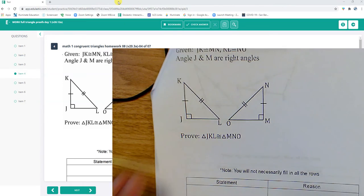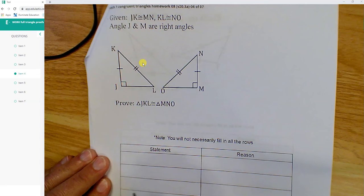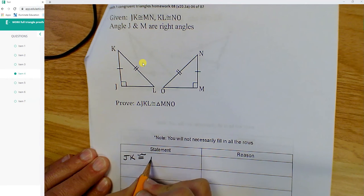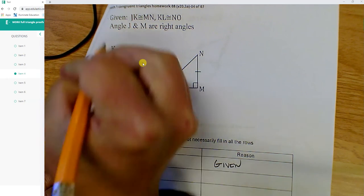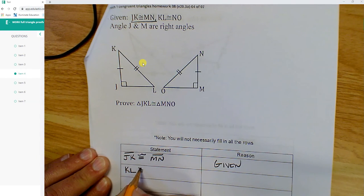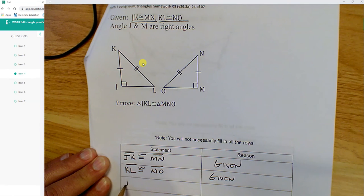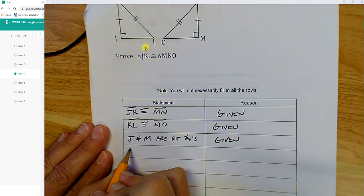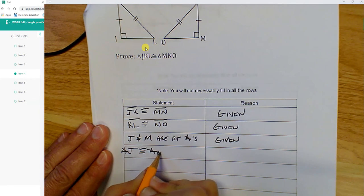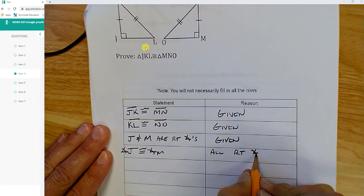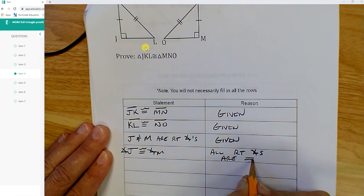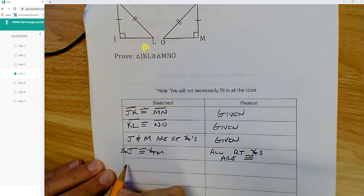I've got a couple of givens, so let's get those givens in there right now. Here we go. JK, MN. KL, NO. J and M are right angles. I'm going to put that J and M are congruent. Angle J is congruent to angle M. All right angles are congruent. And then I'm going to say the two triangles are congruent by hypotenuse leg.